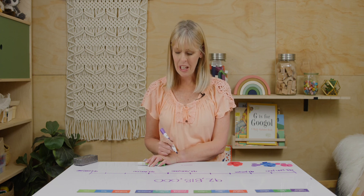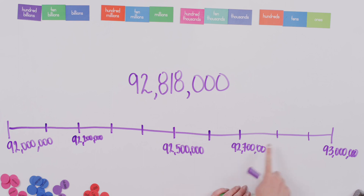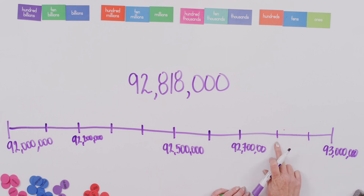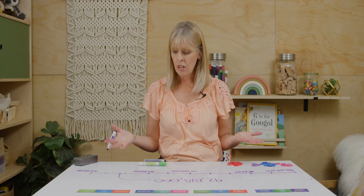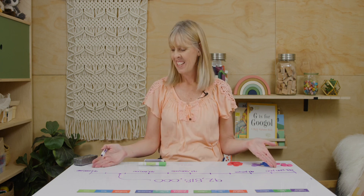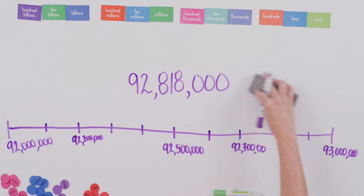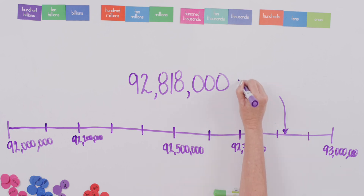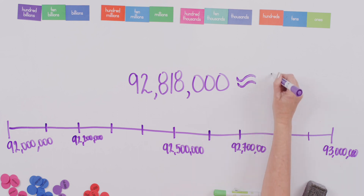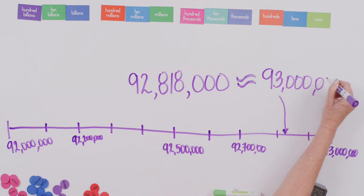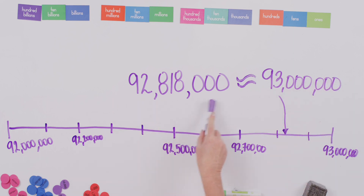I bet you already figured out where our number would go. 92,818,000 — if this is our 92,800,000, it would go right between these two right here. So if our number goes right here on our number line, are you going to round down or round up? You will probably round up. So we would say that 92,818,000 is approximately 93 million — this new little sign just means approximate. That number might be easier for you to remember.